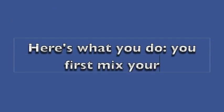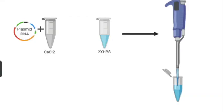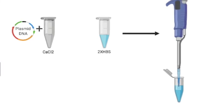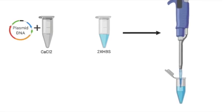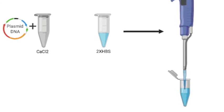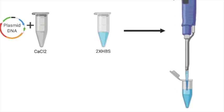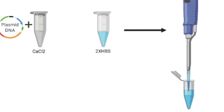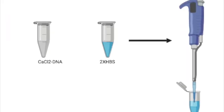Here's what you do. You first mix your DNA with calcium chloride, then you add the calcium chloride DNA mixture dropwise to the HEPES buffered saline. You need to introduce bubbles while mixing the two components. You can do this by vortexing the HEPES buffered saline while adding the DNA calcium chloride mixture dropwise.